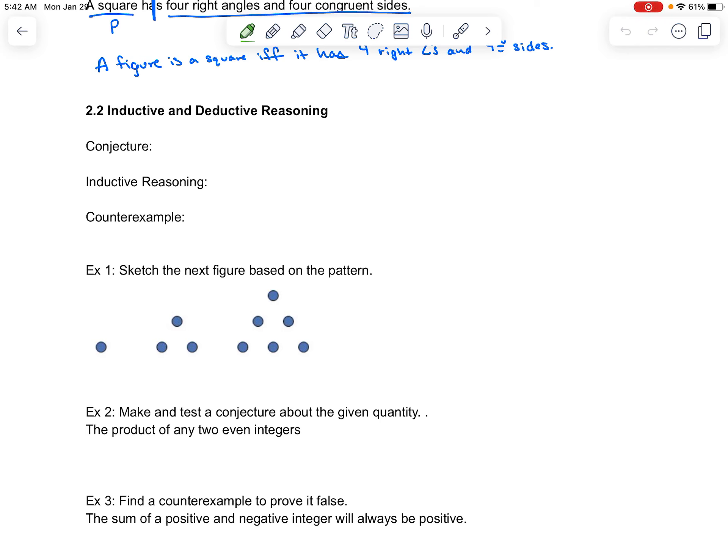I'm going to be talking about inductive versus deductive reasoning. A conjecture is a statement based on an observation. Inductive reasoning is using a pattern to write a conjecture.